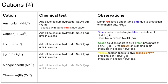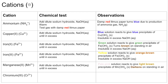Manganese two plus uses the same test. We start with a very pale pink solution, which reacts to give a light brown precipitate of manganese two hydroxide. That darkens on standing in air, and it is also insoluble in excess sodium hydroxide.